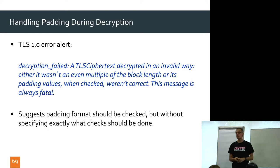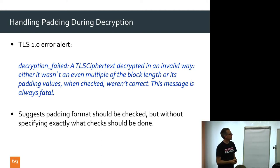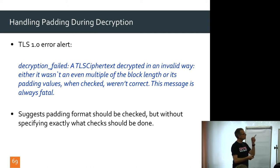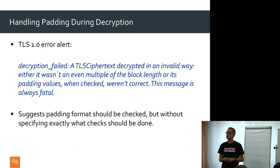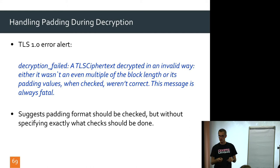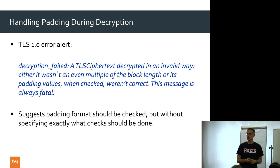So what happens if something goes wrong during decryption? I checked the TLS 1.0 specification, and there are 35 mentions of the word 'padding.' Only one of them refers to what to do when the padding is bad — it's in the description of the 'decryption failed' alert. It says you would send this message if a TLS ciphertext decrypted in an invalid way: either it wasn't an even multiple of the block length, or its padding values weren't correct. This message is always fatal.